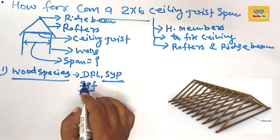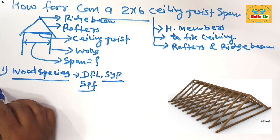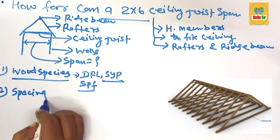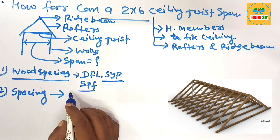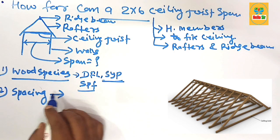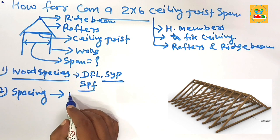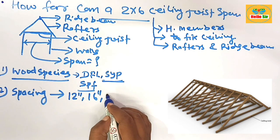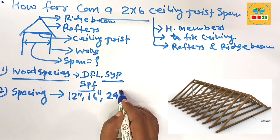The second one is joist spacing. What is the joist spacing? The common distance between two parallel joists is about 12 inches apart, 16 inches apart, or maybe 24 inches apart.